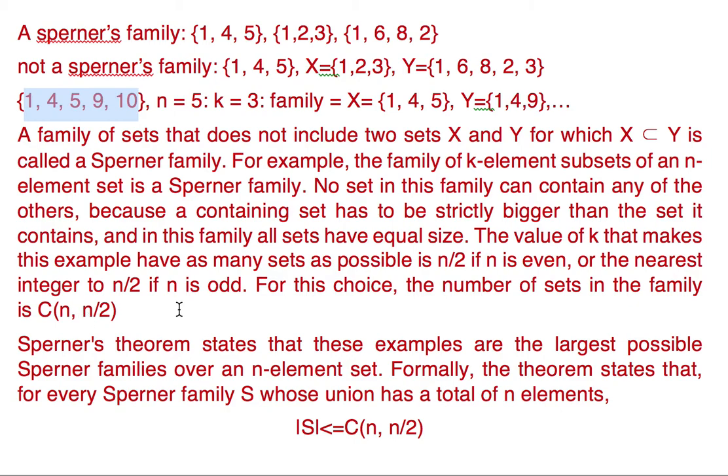So to make NCR maximum for a given N, we should have the value of R as N by 2. So the graph will increase as we increase R for NCR and then up till a point that is N by 2, and then it will again decrease if we increase R more than N by 2. So this is the maximum. Basically NC(N/2) is the maximum value of the size of the Sperner family.